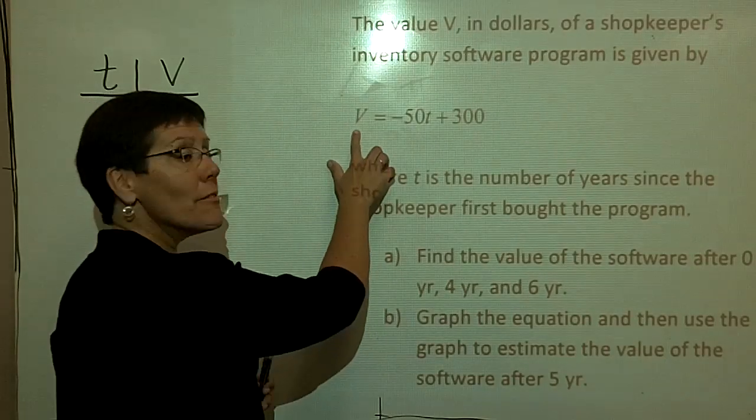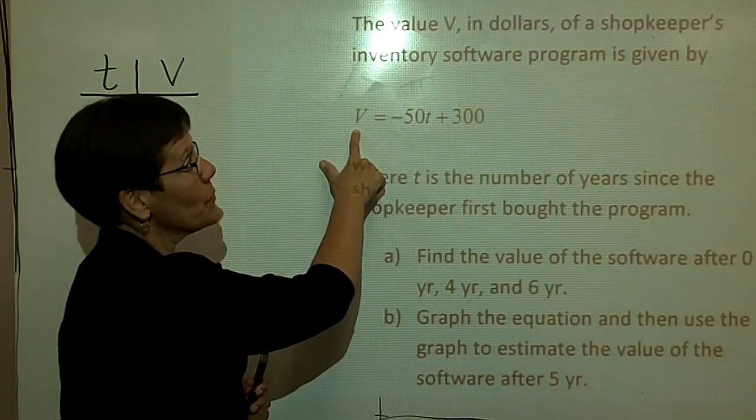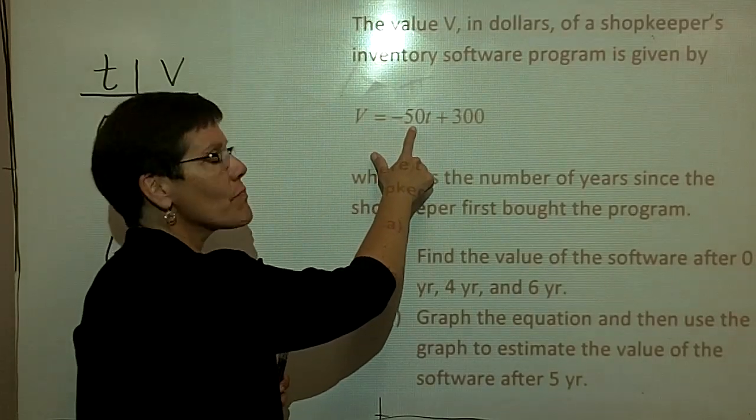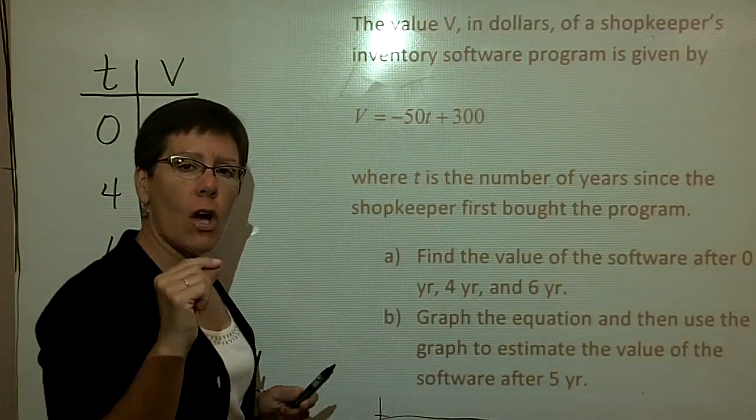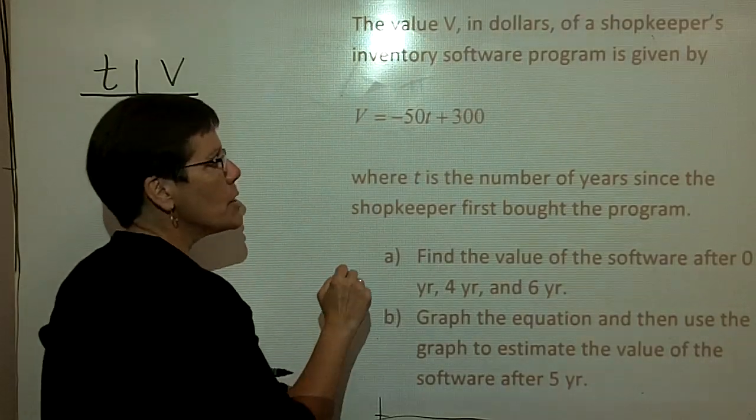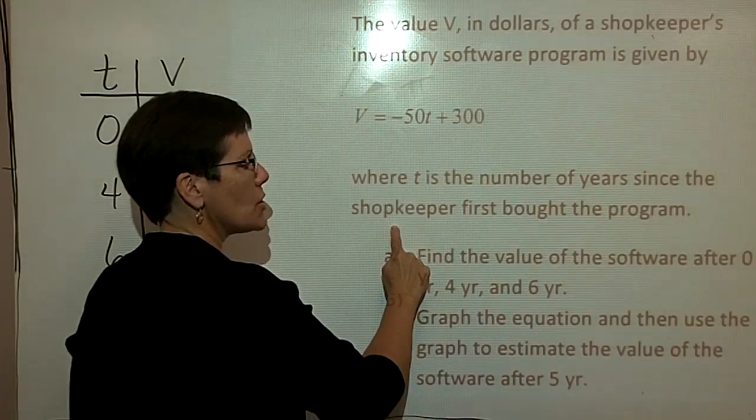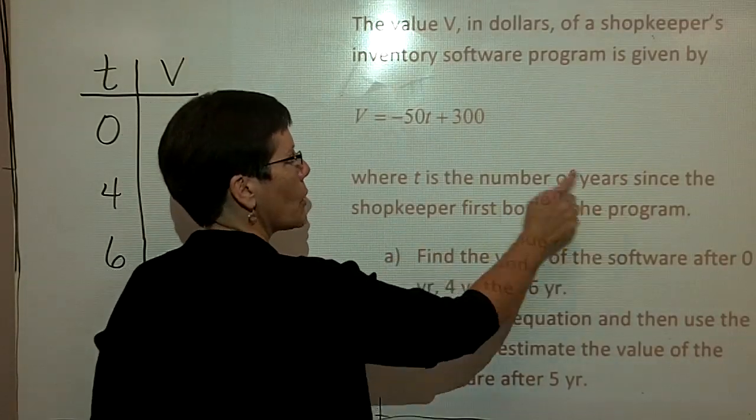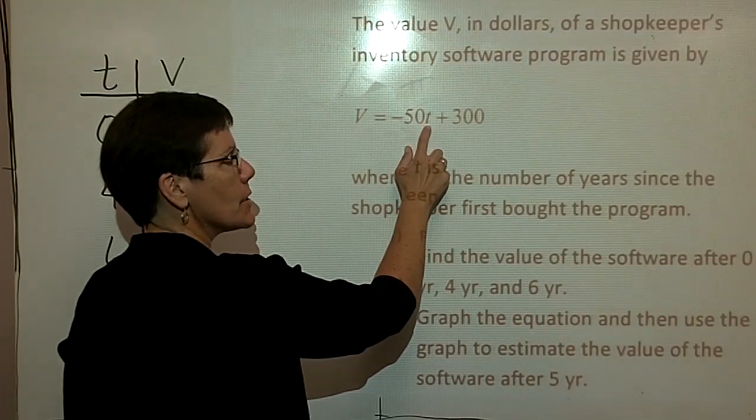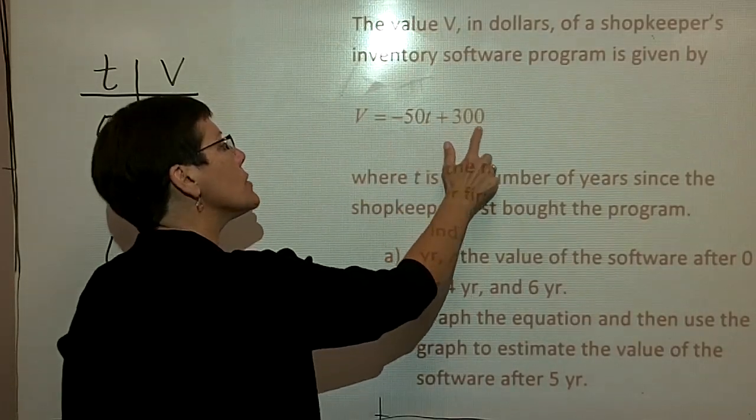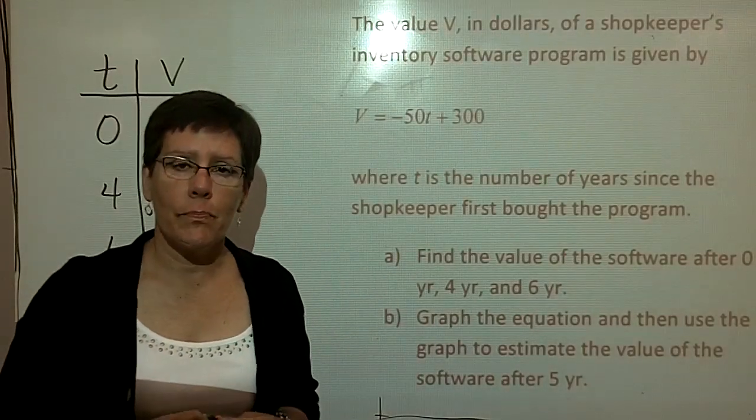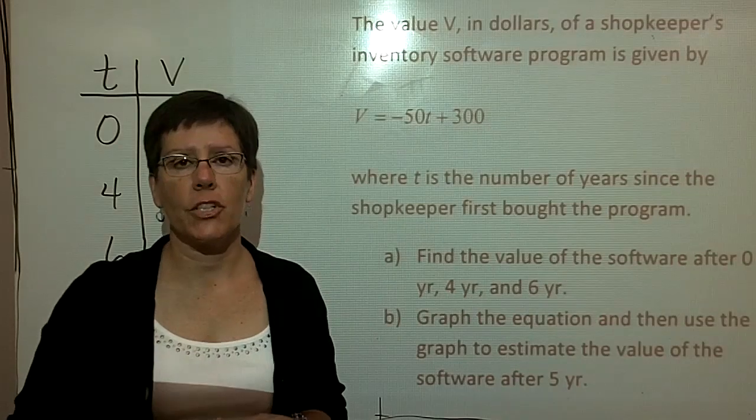Okay. V represents the value of the software program. This negative 50 means essentially that the value of the software decreases by $50 every year, because T is the number of years since the shopkeeper first bought the program. So $50 every year. The $300 is likely the investment in the software. That initial purchase was $300.